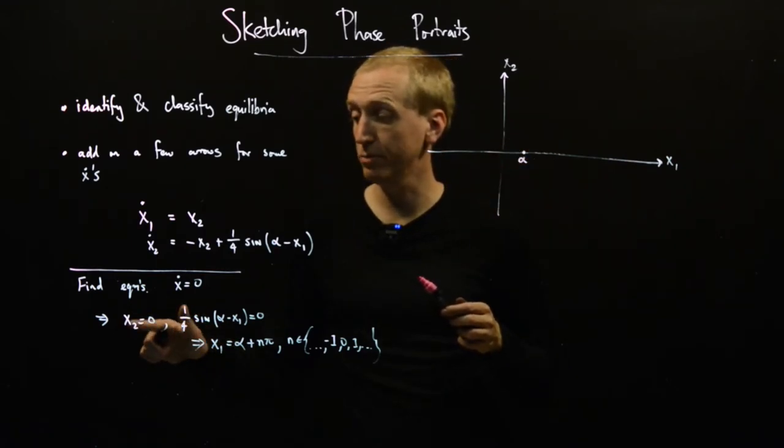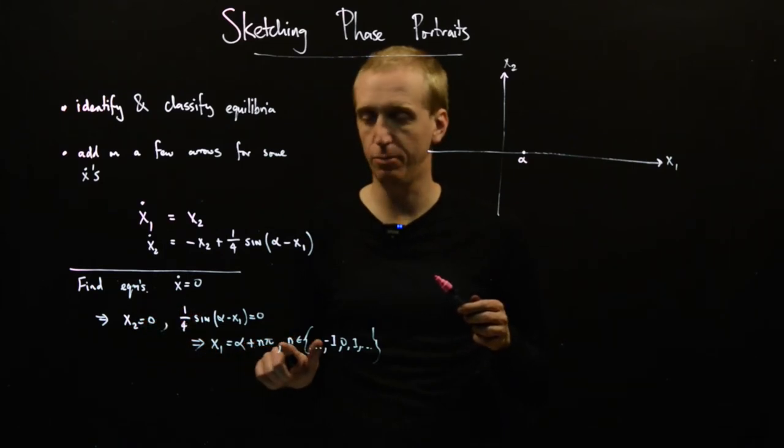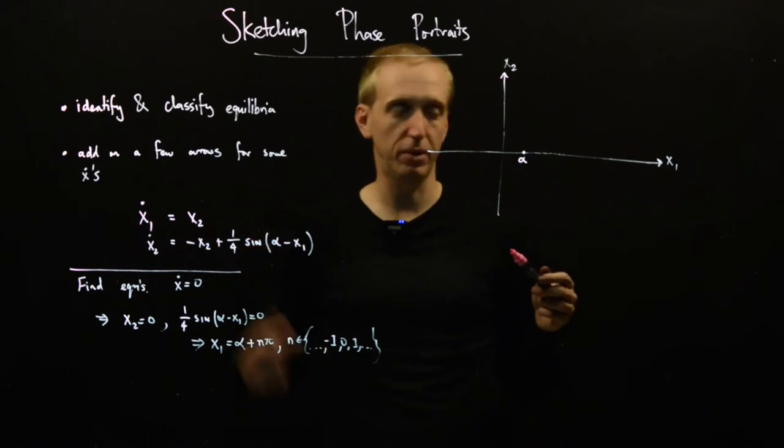Our equilibrium points correspond to x2 is equal to zero, and x1 is equal to alpha, alpha plus n pi, alpha plus pi, alpha plus 2 pi, and so on.